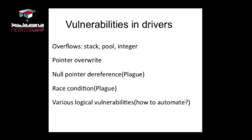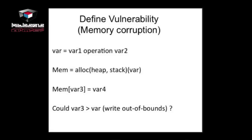A common pattern: there is a multiplication, then allocation of some size, then a loop with memory operations, and on free or in that loop there will be a crash. We can define how such vulnerabilities look in intermediate language: if we have two objects and after some operation — multiplication, addition, or combination — that variable goes to an allocation, and then there's an operation on that memory, the main question is whether the variable is bigger than the total allocated length. If so, it looks like an out-of-bounds write.